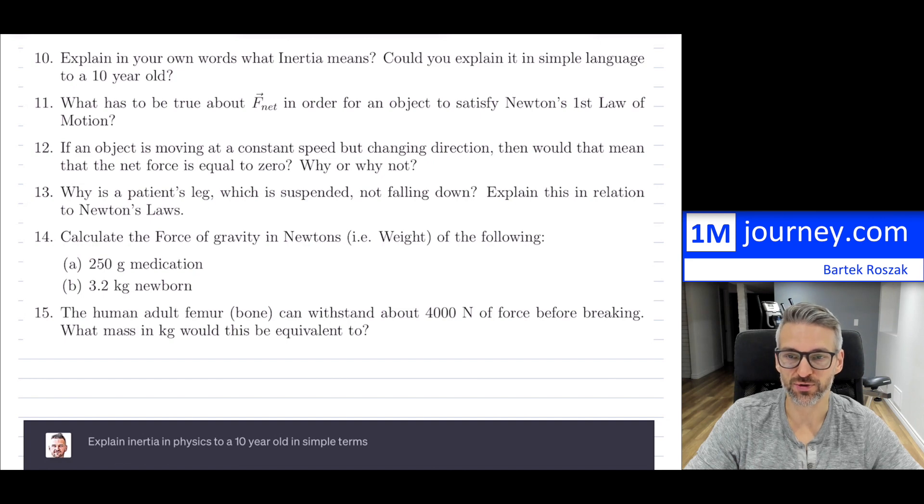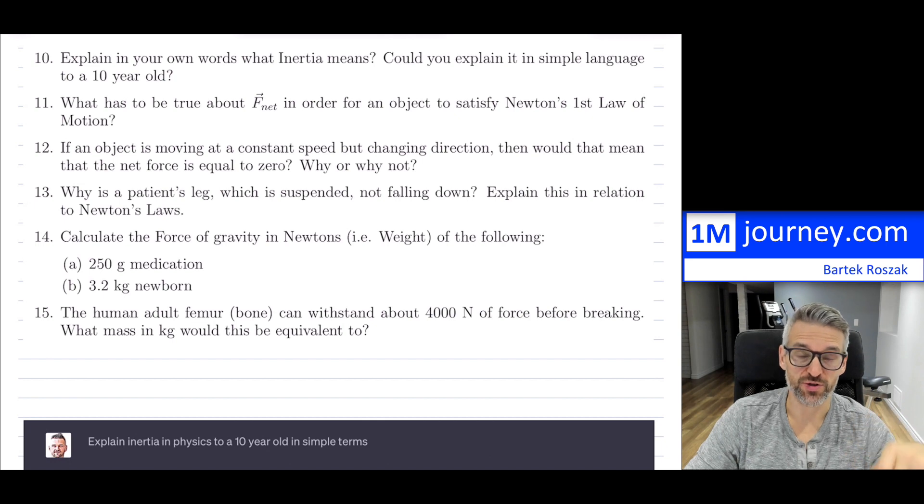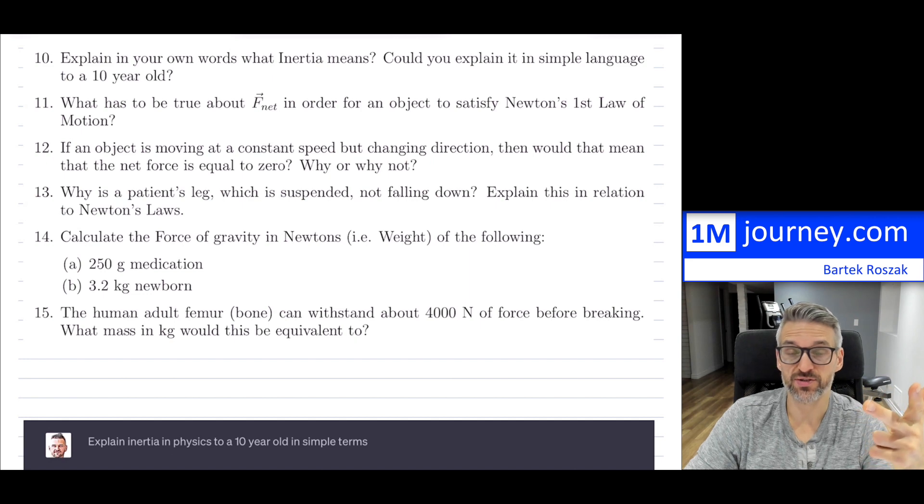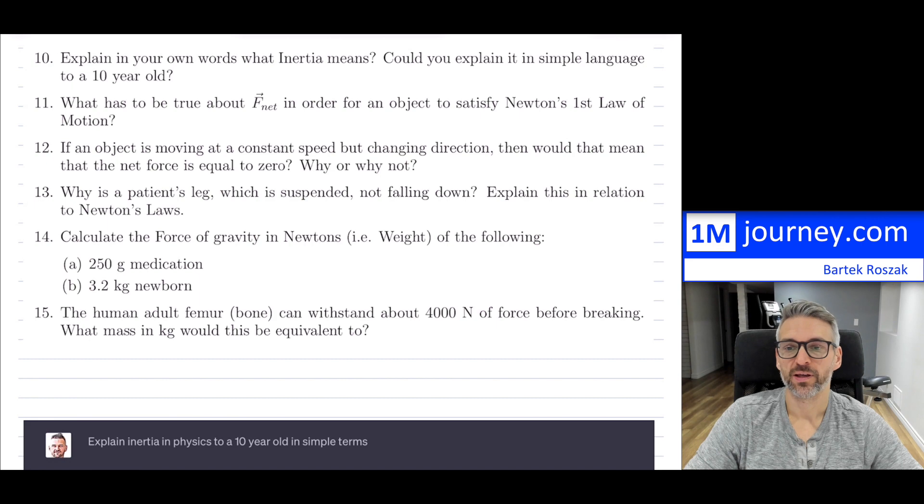Question 12: If an object is moving at a constant speed but changing direction, then would that mean that the net force is equal to zero? Why or why not? The net force is not equal to zero. If you have any change of motion at all—speeding up, slowing down—and in fact in this case you may not be speeding up or slowing down but you can be changing direction, and that is a change in motion. That is the reason why you do have a net force and it's not equal to zero.